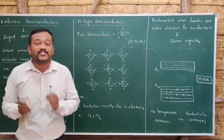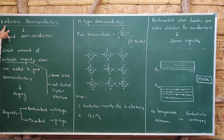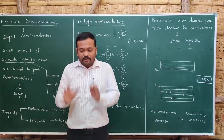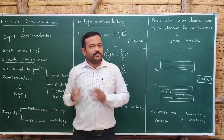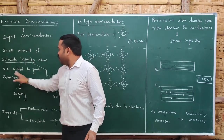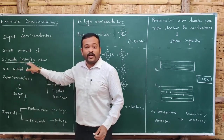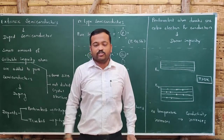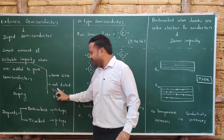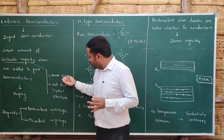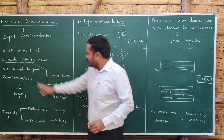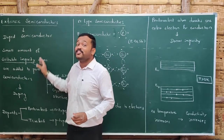The second type is extrinsic semiconductors. Extrinsic means we add something external. Extrinsic semiconductors are doped semiconductors — impurity atoms are added to pure semiconductors. We add a small amount of suitable impurities: the atoms added should be of the same size as silicon or germanium and should not disturb the crystal structure. This process of adding impurities is called doping, and the impurity atoms added are called dopants.